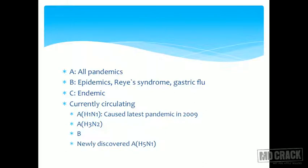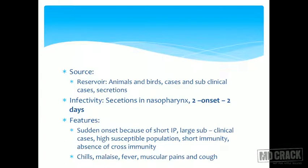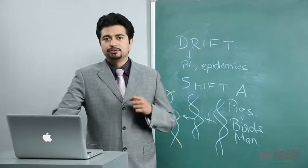The source of influenza is very diverse — reservoirs exist in animals, birds, and humans. Because these viruses circulate across species and can reassort, new strains emerge. Regarding infectivity, secretions in the nasopharynx are infectious from two days prior to onset up to two days after onset of disease.